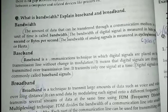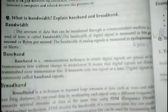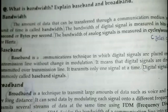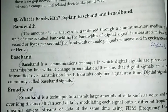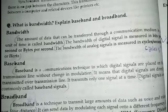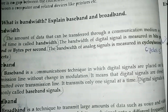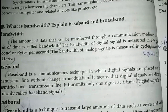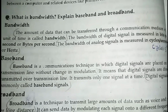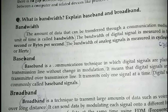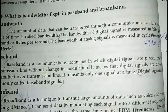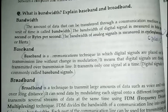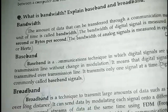If we talk about digital signals, bandwidth will be measured by bits per second — how many bits are transferred in one second. If we talk about analog signals, as you know, there are cycles. Bandwidth of analog signals will be called cycles per second — how many cycles are completed in one second. That is the bandwidth.